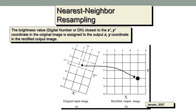This graphic helps visualize the process of geometric correction using the nearest neighbor resampling method. The original input image in coordinates X prime, Y prime is radiometrically corrected and is now going to be stretched and rubber-sheeted so that it can be placed on the surface of the Earth such that each pixel has an accurate location. The coordinate within the original input image X prime, Y prime is mapped to a point XY in the rectified output image, and the digital number taken from the original image will be the brightness value of the pixel closest to the original point X prime, Y prime.